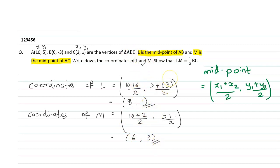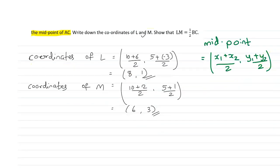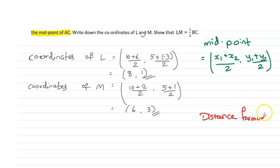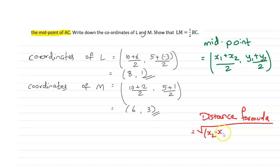Now we have to show that LM is half of BC. We can find the length of LM and length of BC by the distance formula. In coordinate geometry, the distance between two points (X1, Y1) and (X2, Y2) is given by the square root of (X2 minus X1) squared plus (Y2 minus Y1) squared.